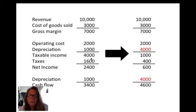Depreciation is $1,000 here to get to taxable income, then 40% taxes, net income, and we add back depreciation to get cash flow of $3,400.